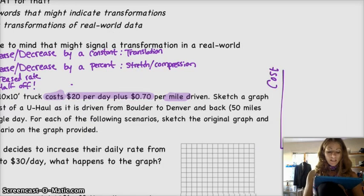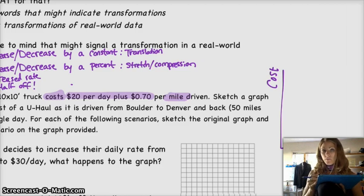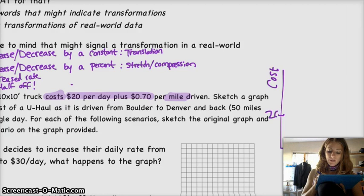Alright, so in this case, our cost is $20 per day. And if we're only looking at a single day, then we should be fine. So your initial cost, regardless of how many miles you go, you're always spending $20. Excuse my scale right now. So your initial cost is $20. And then every mile after that, it goes up by $0.70.